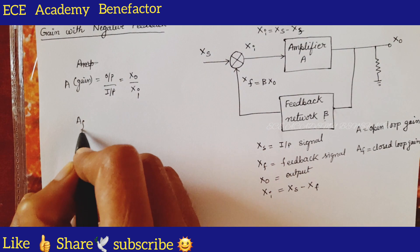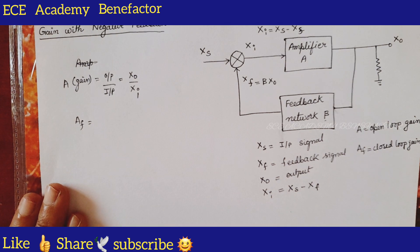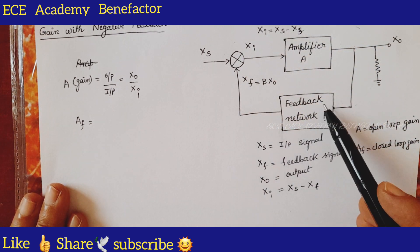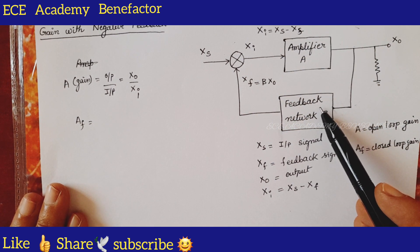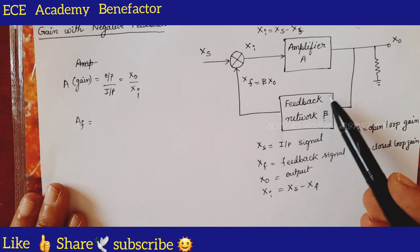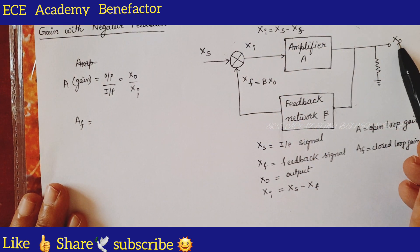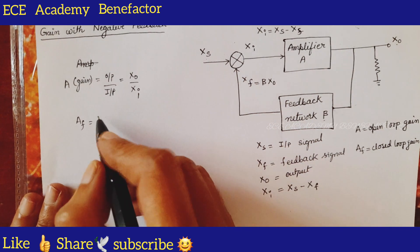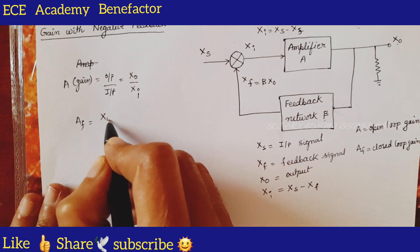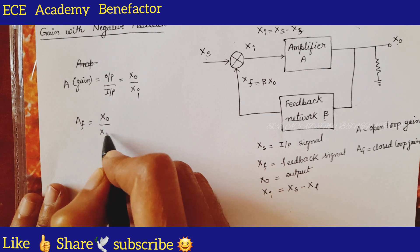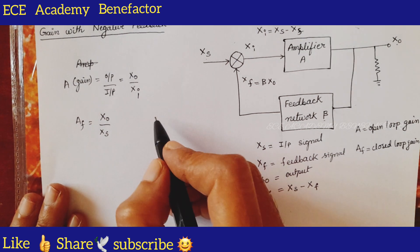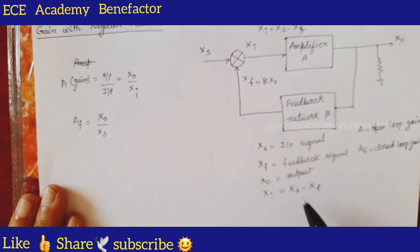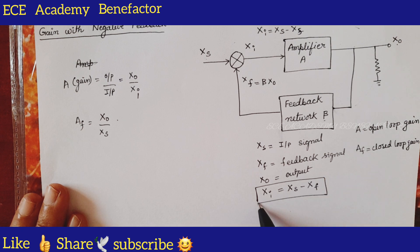A_f is the gain with feedback or closed loop gain. This complete circuit is a closed loop or feedback amplifier. The output for this complete circuit is x_naught and the input is x_s, so A_f equals output by input, which is x_naught by x_s. And x_i equals x_s minus x_f.